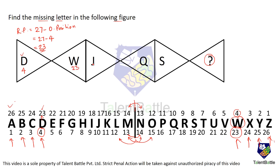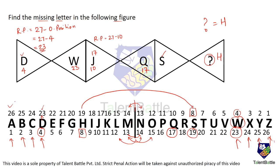Let's check J: J's position number is 10, so reverse position is 27 minus 10 which is 17. Position number 17 is Q — correct. Now for S: S's position number is 19, reverse position is 27 minus 19 which is 8. Position number 8 is H. So the question mark is H; H is the mirror image of S. With this chart ready before the exam, these questions become very easy and you can get the answer very quickly.